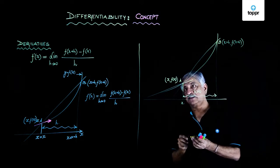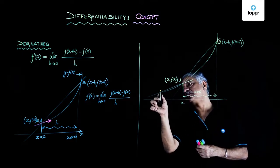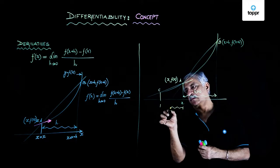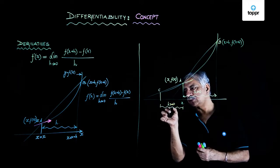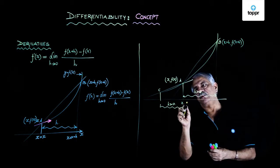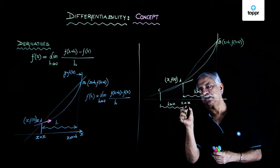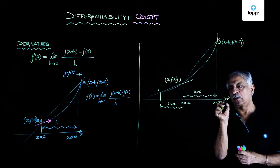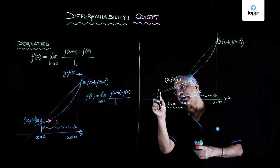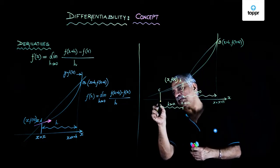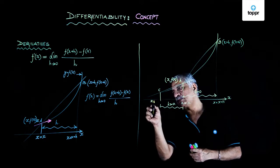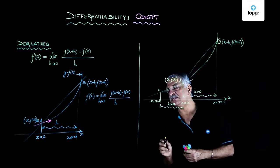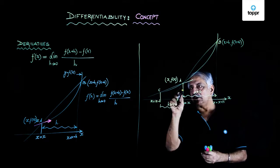And I take say another point, say C. Again I take this also h, which is a positive quantity. Then if this is x = x, this is x = x + h. Then can I not say that the coordinate of C, the x coordinate, is x = x - h. If this is x and this is h, so this is x - h. I follow the same procedure.